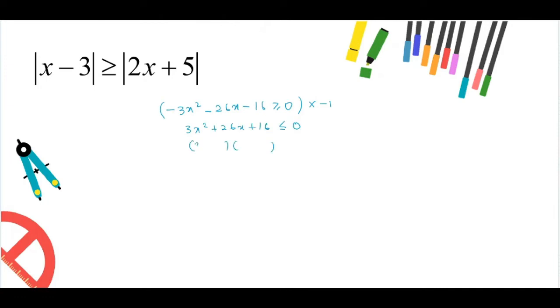By factorization, I will get 3x plus 2 times x plus 8 less than or equals to 0.